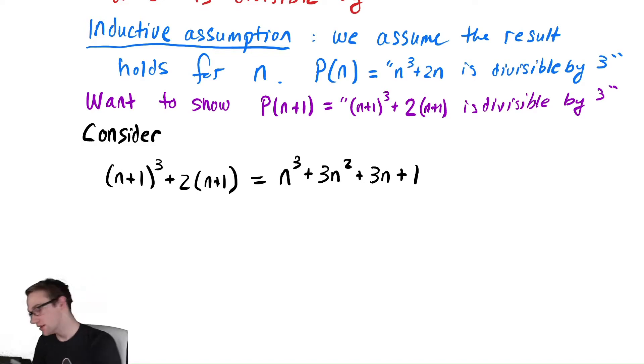That's (n+1) cubed plus—I'm going to distribute the 2 in the next term. We have 2n plus 2. And now for our next step we know one fact which is that n³ + 2n is divisible by 3. And if we notice we have n³ + 2n appearing in this expression. So we're going to want to use our inductive hypothesis there.